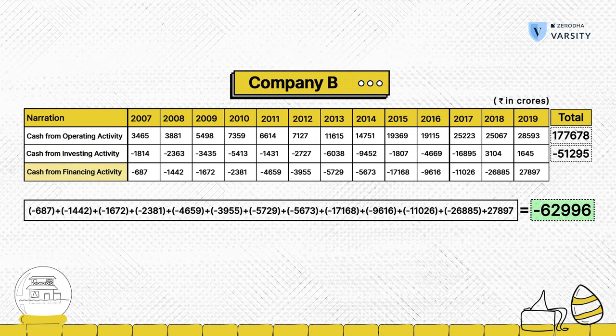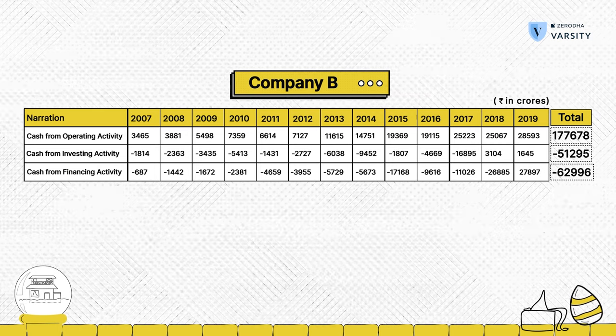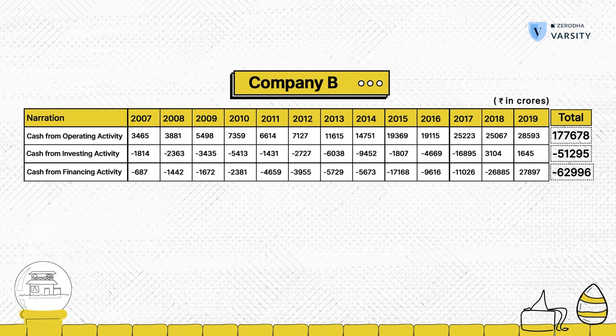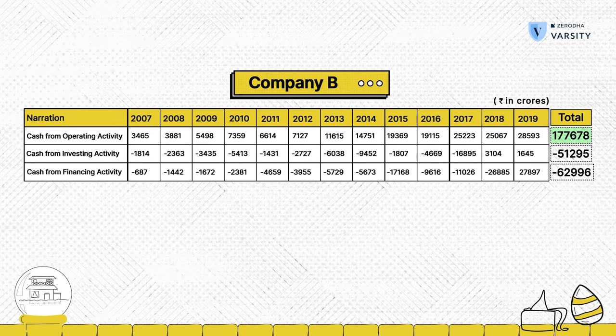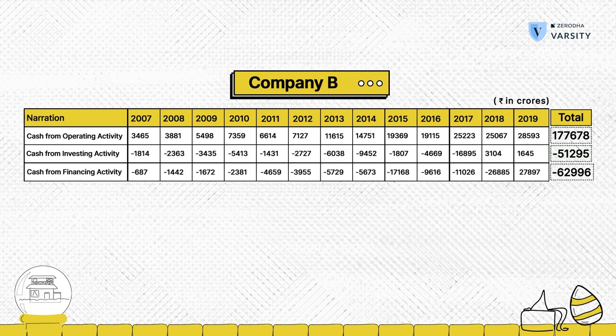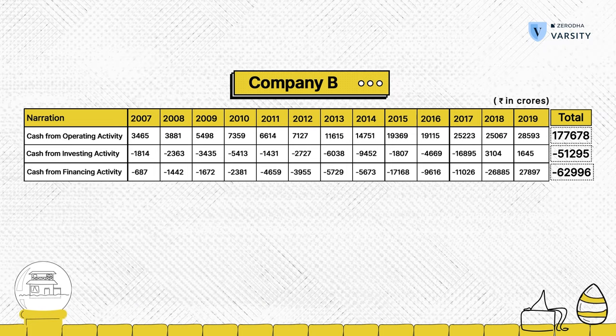The company is generating cash flow from operations to the extent of 1.7 lakh crores. A part of it — roughly about 51,000 crores — has gone back into investing in itself, and a bulk of it is actually being distributed as dividends. I know it's dividends and not debt repayment because there is so much surplus cash from operating activities. This is a company that looks interesting to me. As a fundamental analyst, I would use this as a starting step to figure whether to deep dive into the company or not.